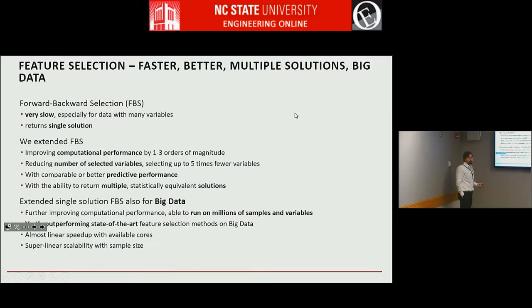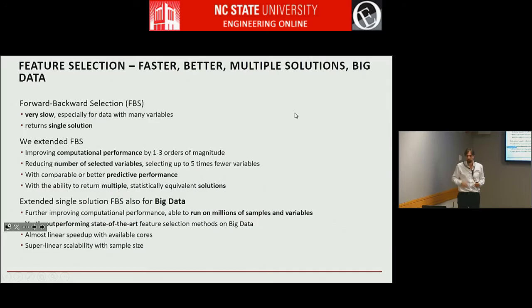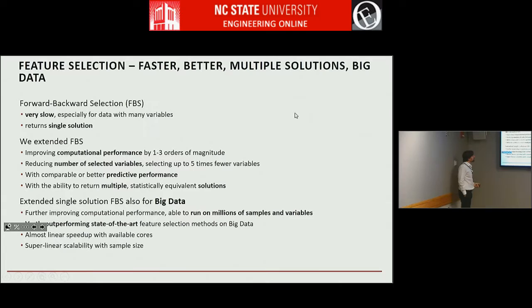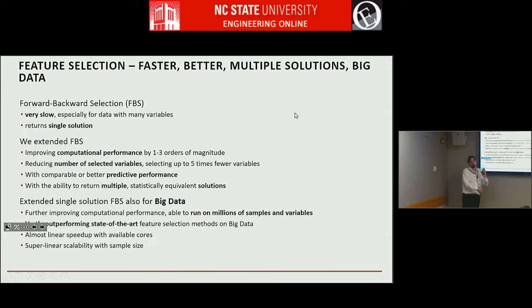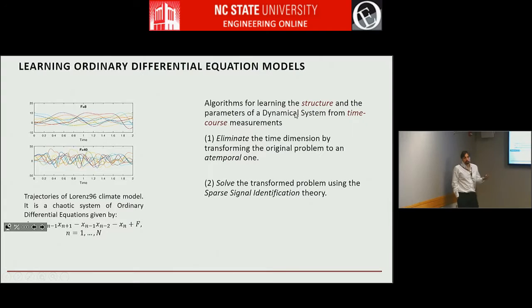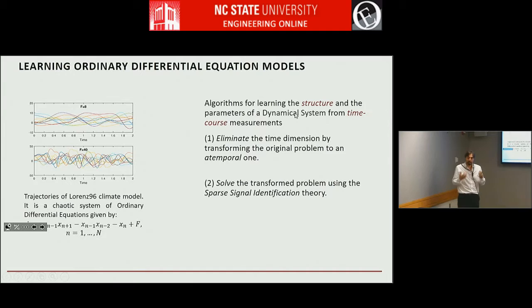We've been working on feature selection for big data and small data. We have improved computational performance by one to three orders of magnitude for the standard forward-backward selection algorithm. We've also incorporated ideas to make this work for big data where you have a matrix of tens of millions of samples by tens of millions of features. Another interesting dimension is to learn the type of causal models people use in engineering and physics, some of which are in the form of ordinary differential equations — learning both the structure and the parameters from data.